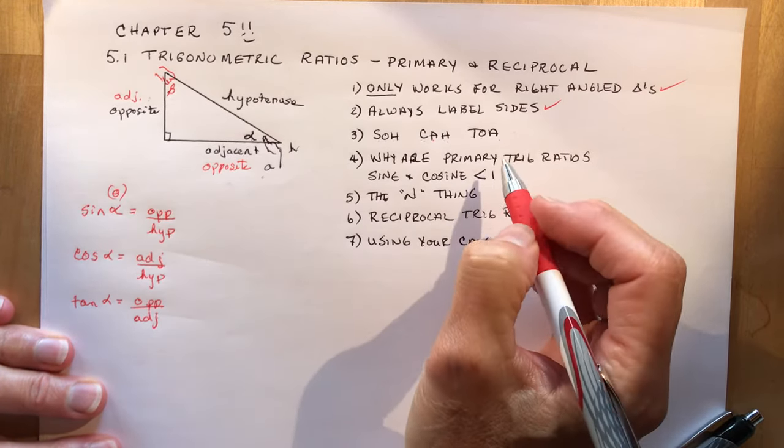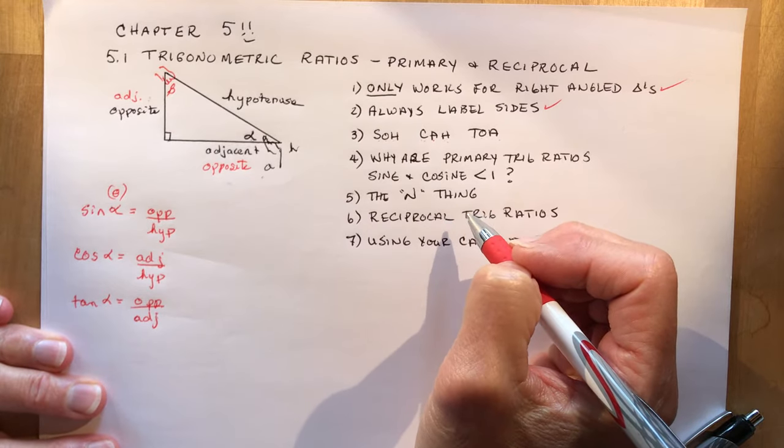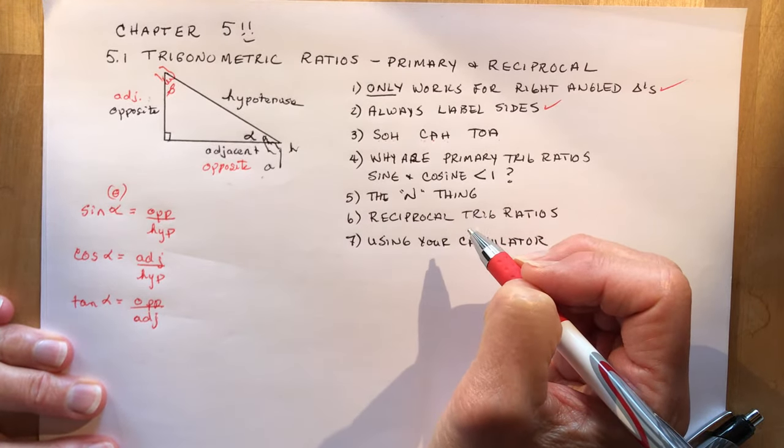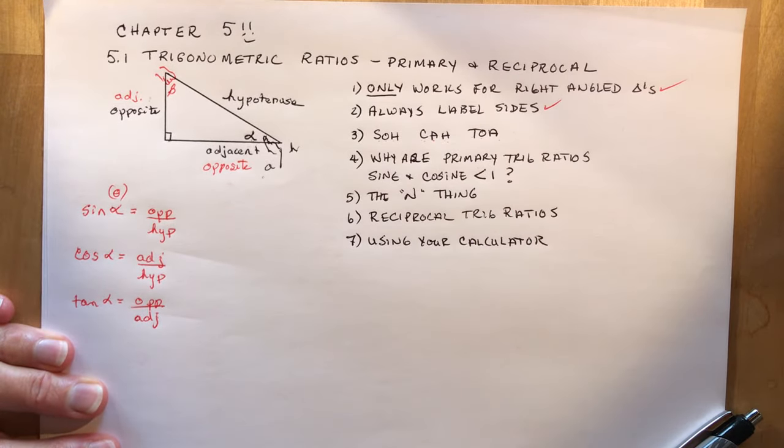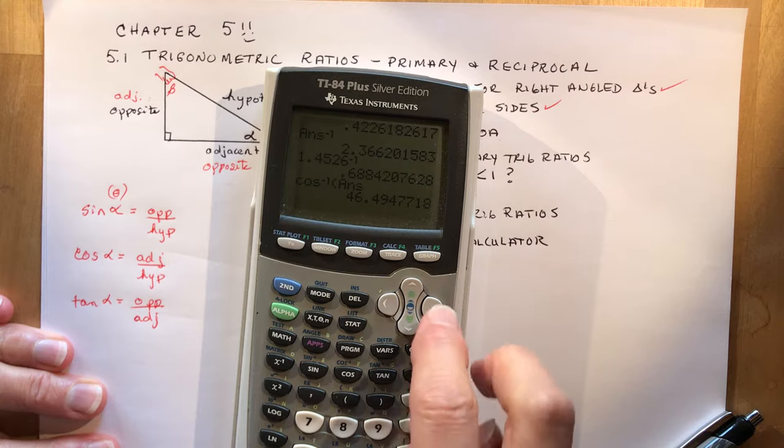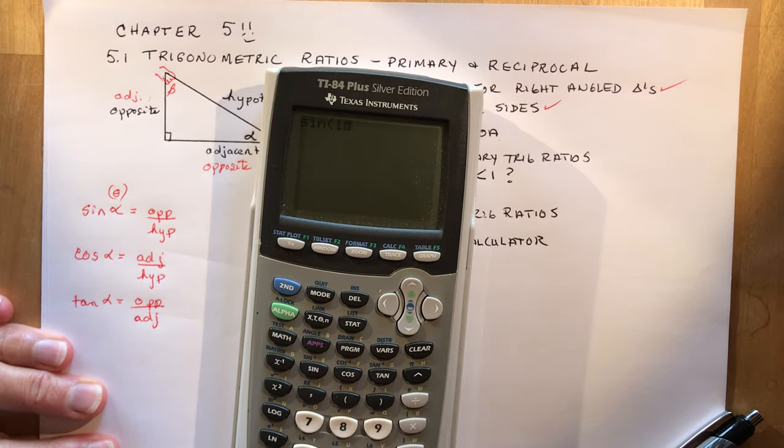Now one of the questions you may be asked on the test, I like to throw it in to see if my students are understanding what primary trig ratios are all about: why are the primary trig ratios of sine and cosine always less than one? For instance, if I said, oh, what's the sine of a hundred degrees? It's going to give me point nine eight four.